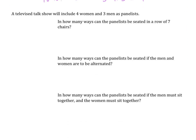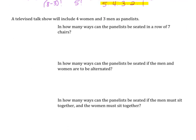A televised talk show will include four women and three men as panelists. How many ways can we seat them in a row of seven chairs? We have seven options for the first chair, six for the second, five, four, three, two, and one. Multiplying them all together, we have 5,040 options to seat these panelists.